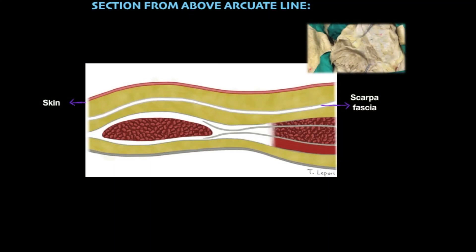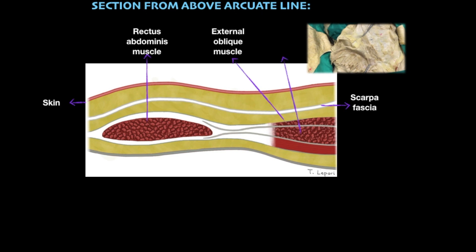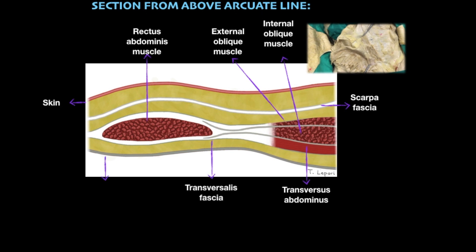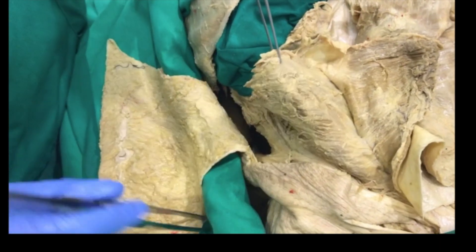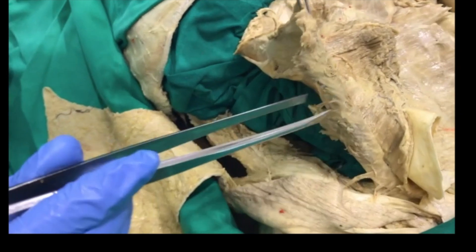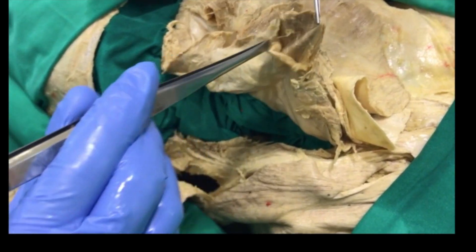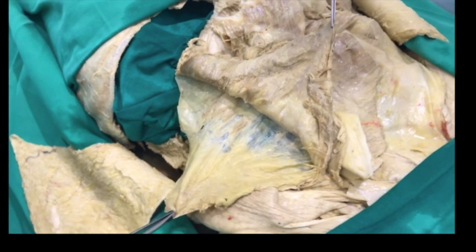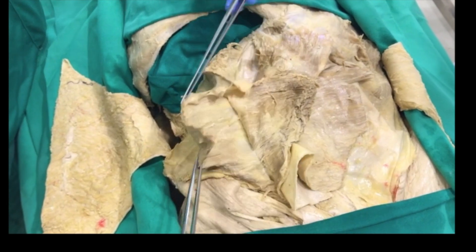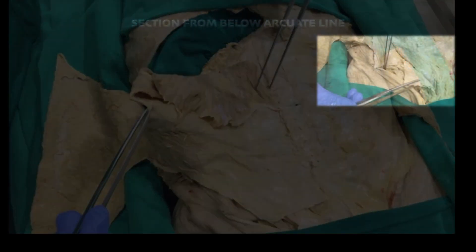The aponeurotic component of the internal oblique carries a crucial distinction occurring above and below the arcuate line. Above the arcuate line, the aponeurosis splits to form two sheets that encompass the rectus abdominis, contributing to both the anterior and posterior sheaths. The innermost muscle in the anterolateral group is the transversus abdominis, lying directly under the internal oblique and above the transversalis fascia. The transversalis fascia is a thin layer of connective tissue lying between the deep surface of the transversus abdominis and the extraperitoneal fat.